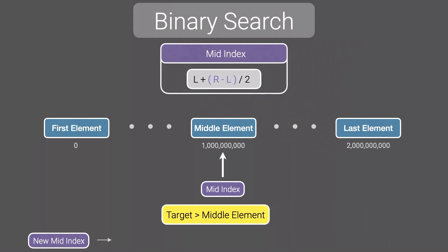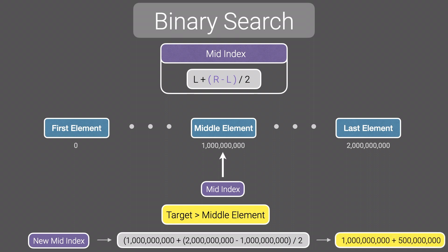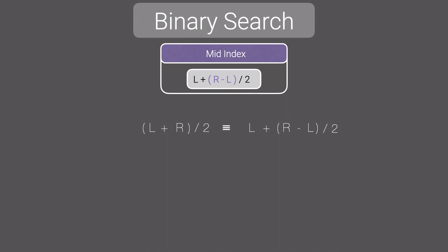Knowing this, we can use another formula to avoid the overflow condition. Instead of L plus R divided by 2, we can use L plus (R minus L) divided by 2. This gives us an index of 1.5 billion. An easy way to see why this formula won't overflow: removing the division by 2, we end up with L plus R minus L, which is just R — so we're bounded by R's value, which is a valid index. This new formula is also mathematically equivalent to the original, since R minus L over 2 equals R over 2 minus L over 2, giving us L plus R over 2 minus L over 2, which simplifies back to L plus R over 2.